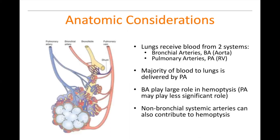First, anatomic considerations: the lungs receive blood from two systems — the bronchial arteries, which come off the aorta, and the pulmonary arteries off the right ventricle. Most blood to the lungs comes from the pulmonary arteries; however, it's the bronchial arteries that play a role in hemoptysis.